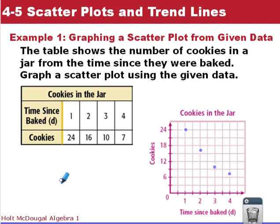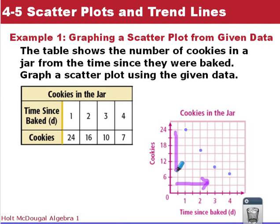There we have our scatter plot. Looking at this, it appears to be a negative correlation. As our days increase, the number of cookies we have left are decreasing. So we have a negative correlation.